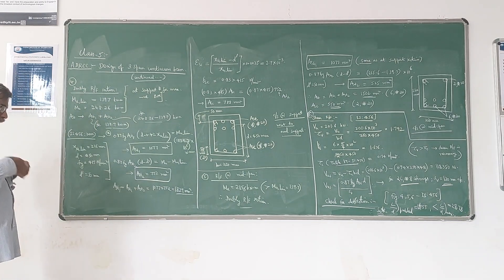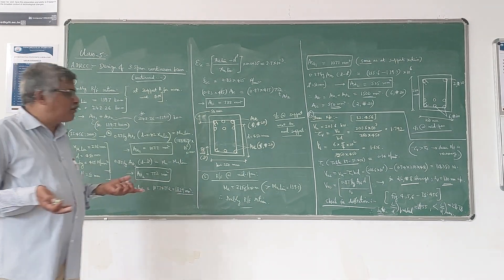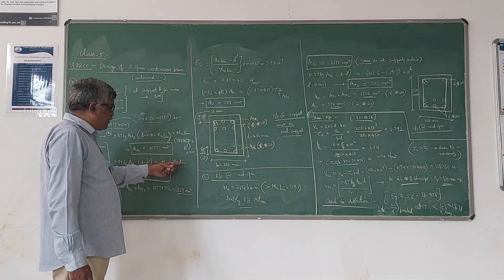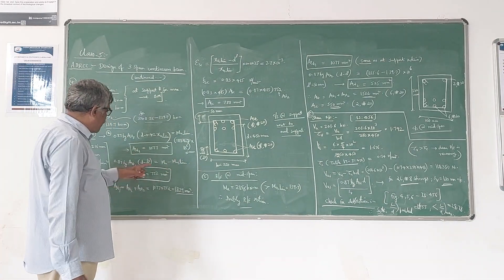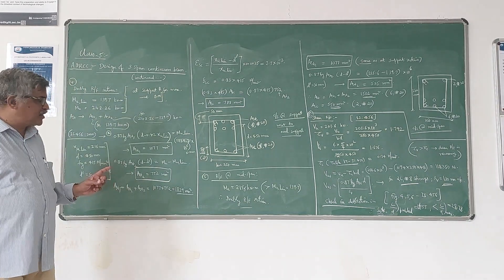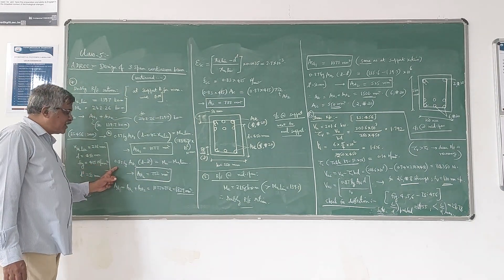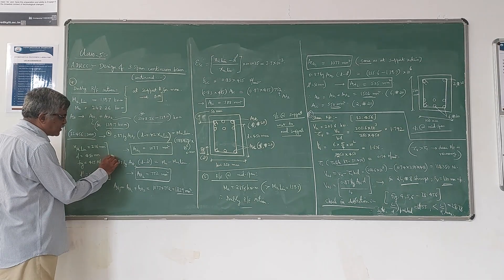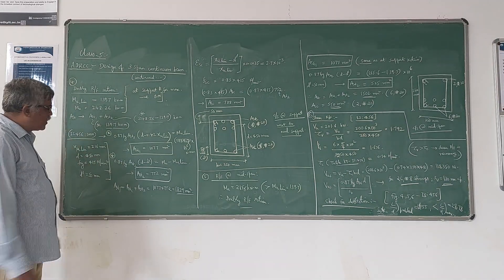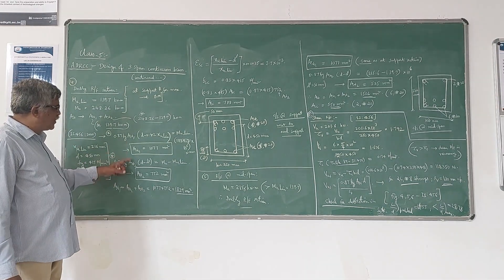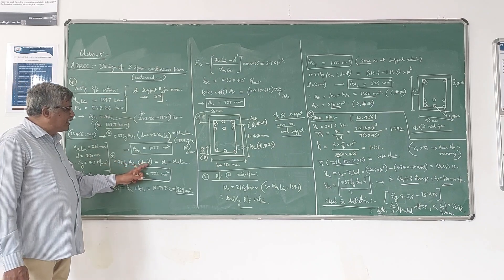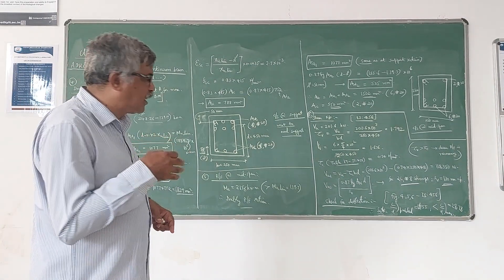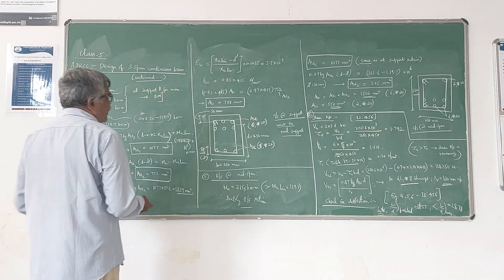Now the balance moment is 248.26 minus 138.7 kNm. For that balance moment, we have to design one more steel AST2. The corresponding equation is: 0.87 Fy × AST2 × (d − d') = MU − MU_lim. Here d' is the effective cover on the compression side.